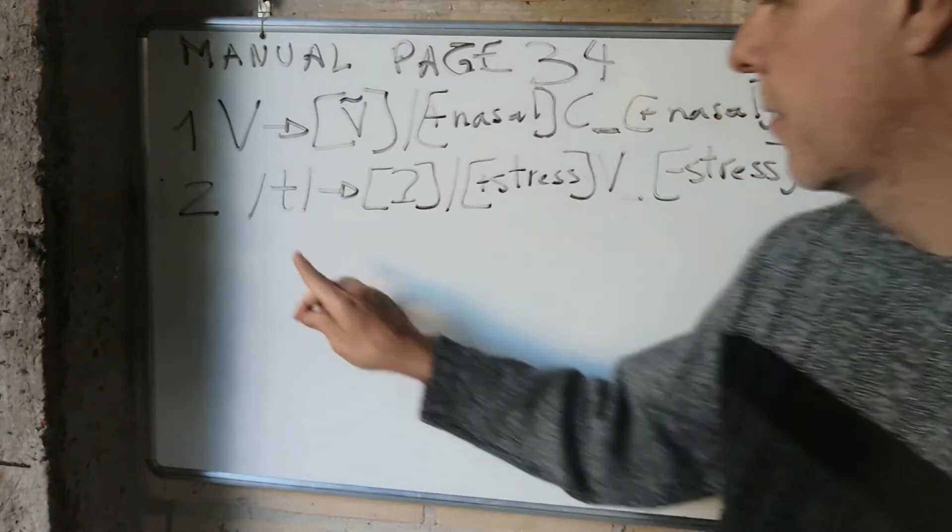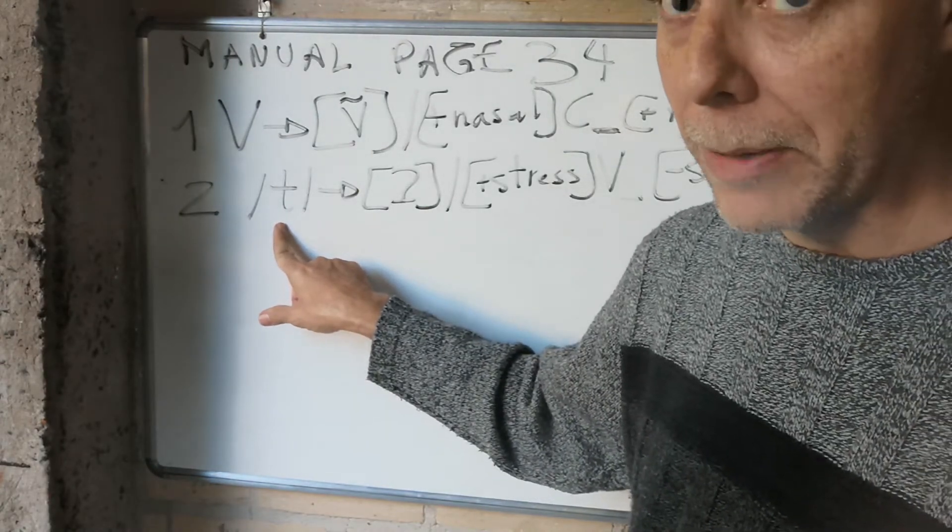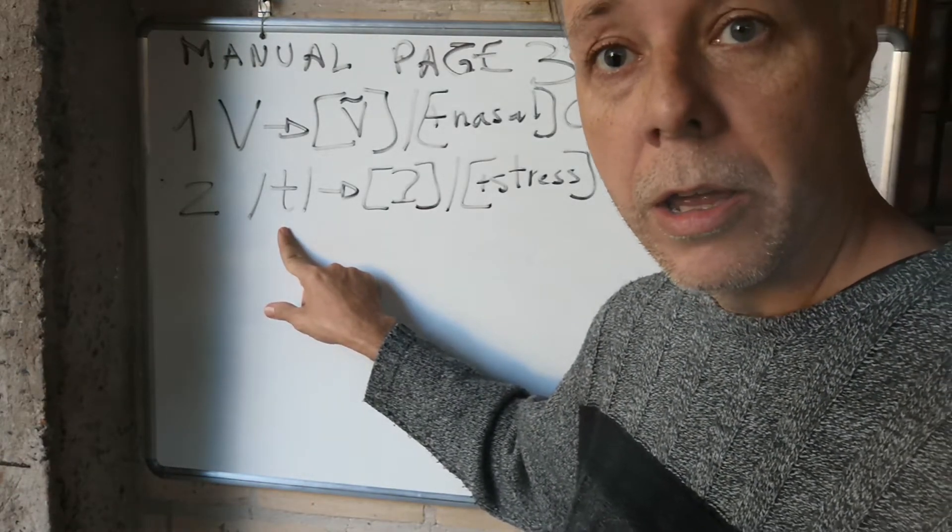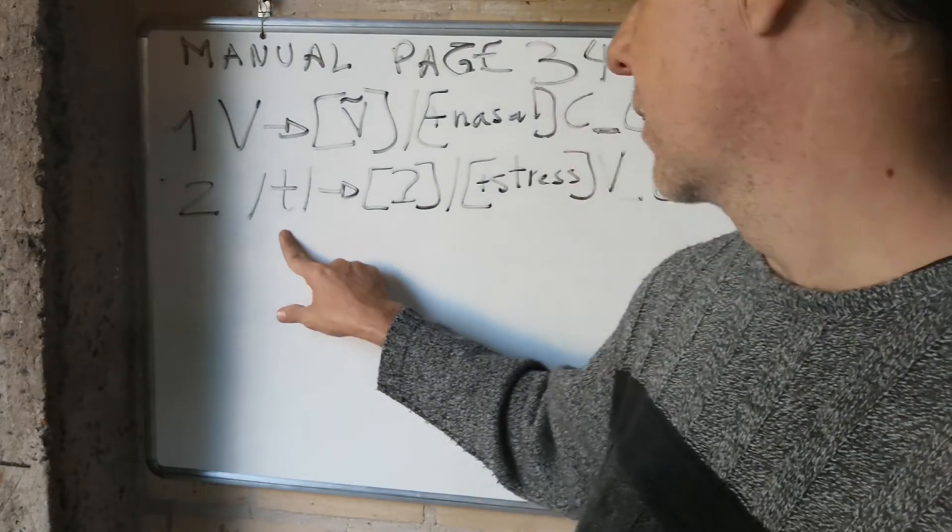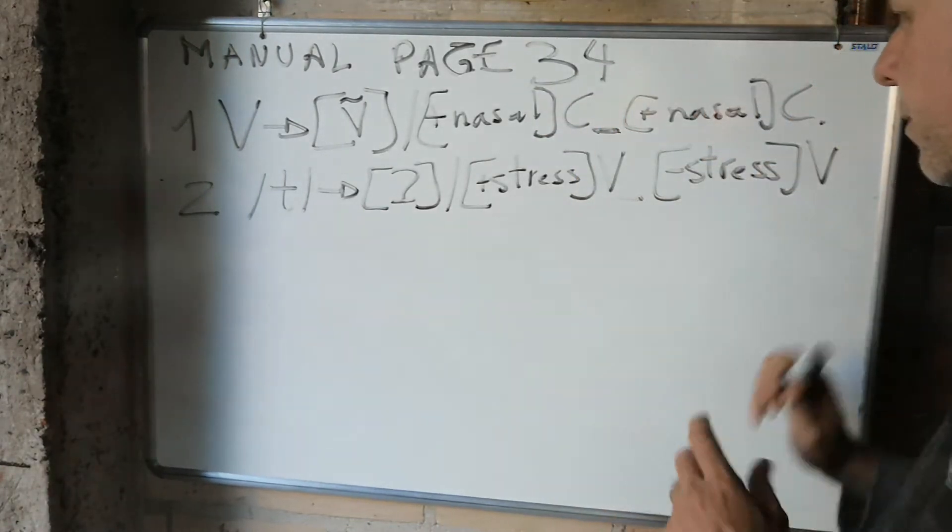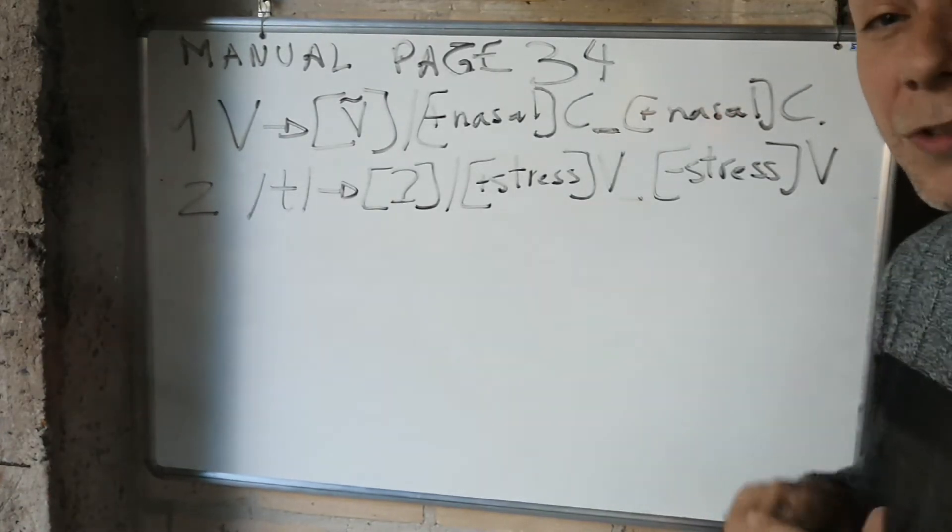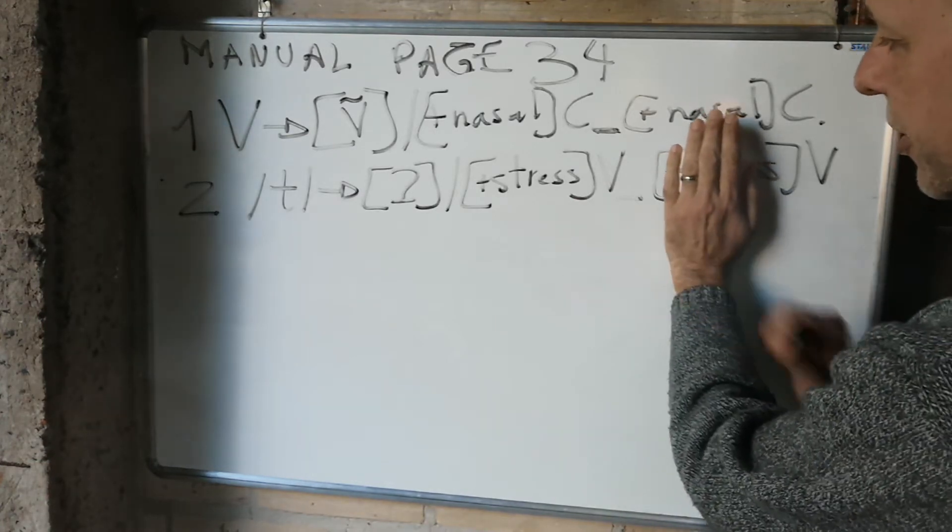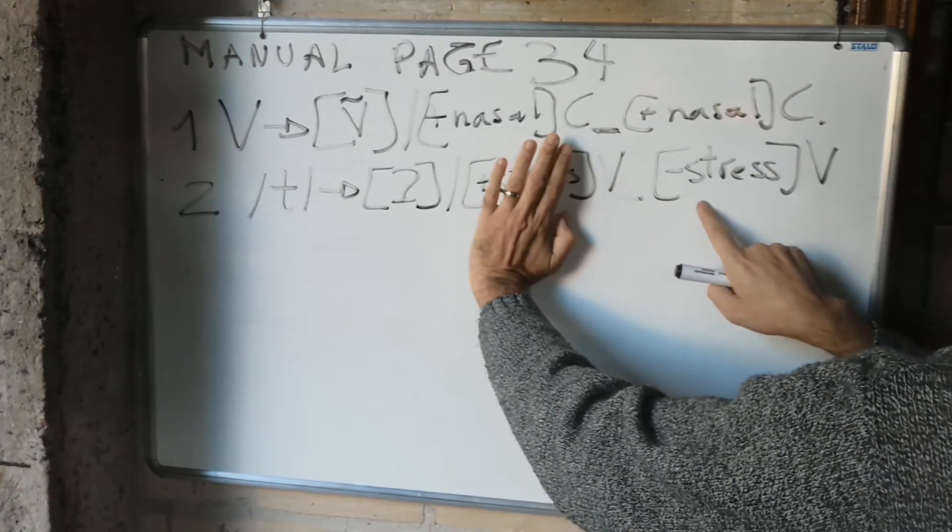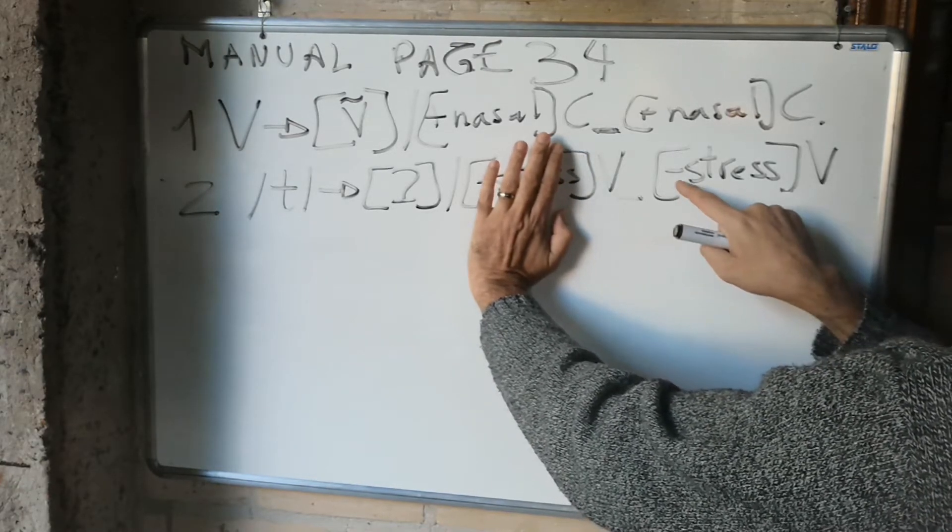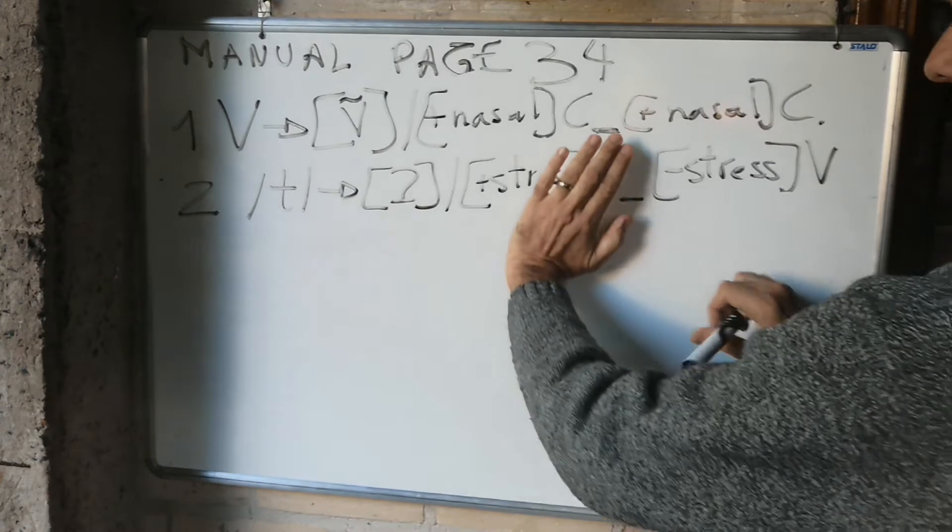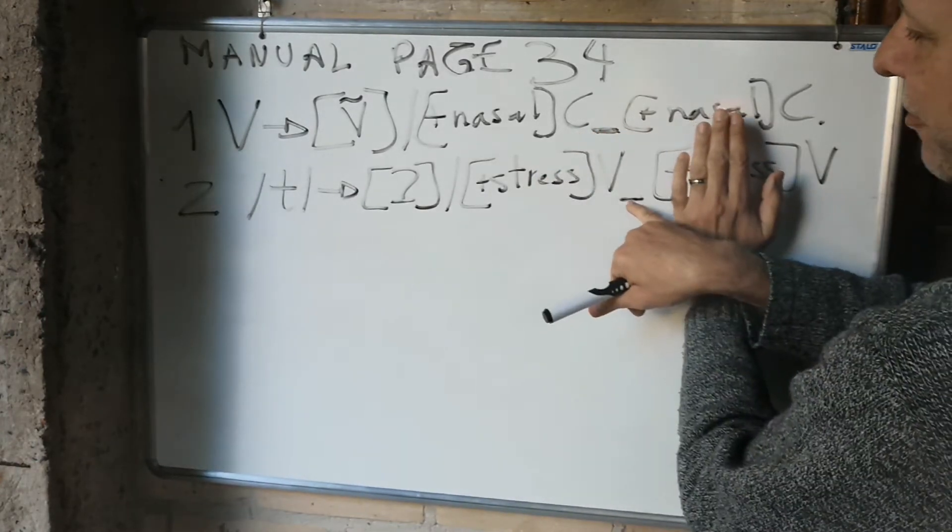Here we have this sound, this phoneme - the voiceless alveolar stop phoneme - becomes glottal in the environment of between vowels. I can say between vowels, but this is too general. Let's be more specific: after a stressed vowel and before an unstressed vowel. Remember, the underscore represents the sound - the glottal sound in this case.